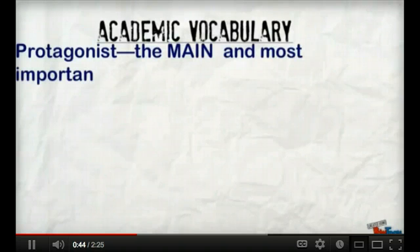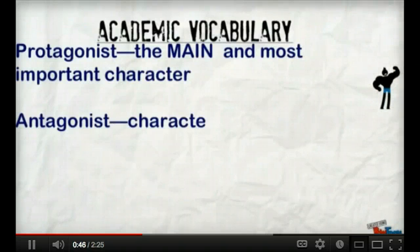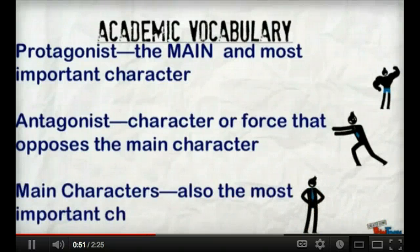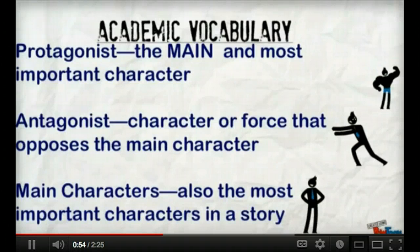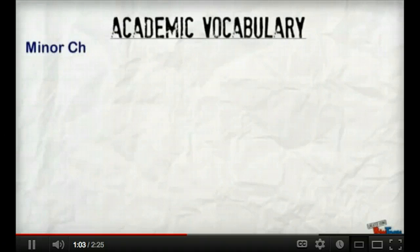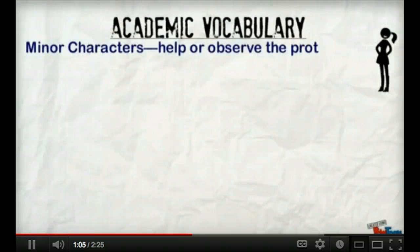A protagonist is the main and most important character in your story, but the antagonist is the character or force that opposes your protagonist. Then you have main characters outside of the protagonist that are also the most important characters in your story. On the other hand, you have minor characters who help or observe the protagonist.